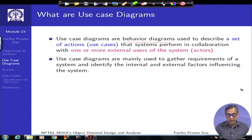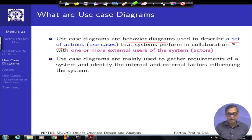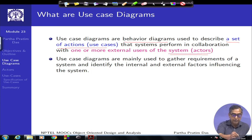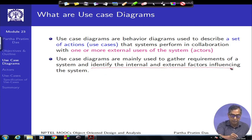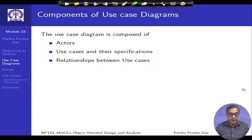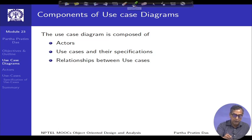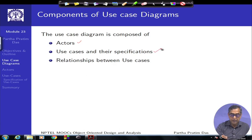It is a behavioral diagram and it is used to define a set of actions. A use case means it is a particular case of use or case of action that we are interested to look at. Who takes that action? That action will be taken by the actor. Use case diagrams are mainly used to gather requirements of the system and identify internal and external factors. A use case diagram is composed of three major components: the actors, the use cases, and the relationships.